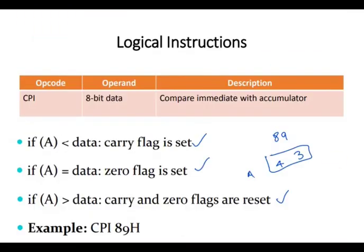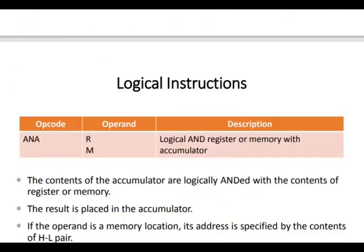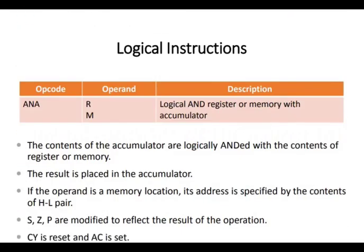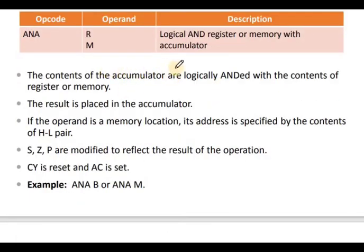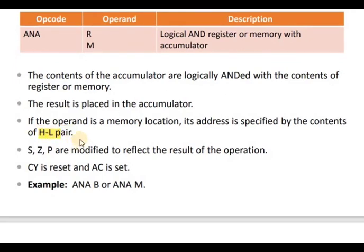Next is the logical AND instruction — AND register or memory with the accumulator. The contents of the accumulator are logically ANDed with the contents of the register or memory. The result is placed in the accumulator. If the operand is a memory location, the HL register pair is used to provide the address.